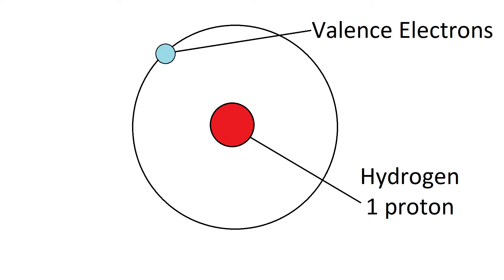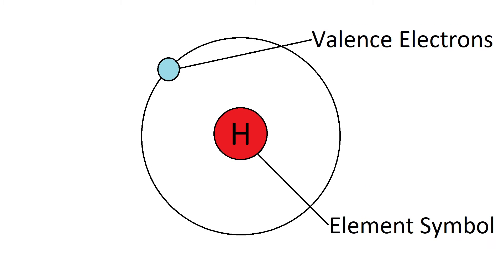Now to simplify the drawn model for larger atoms with lots and lots of electrons, we're going to only put the atomic symbol or elemental symbol in the middle to represent the nucleus and then how many valence electrons they have on the outside.